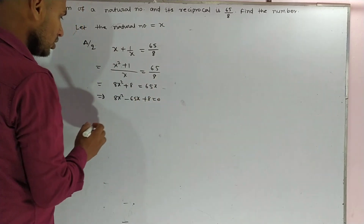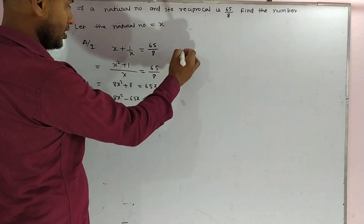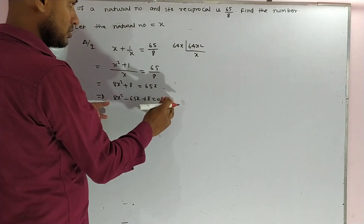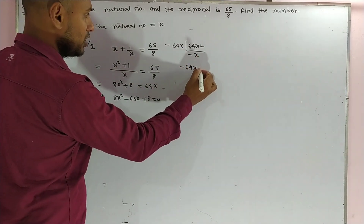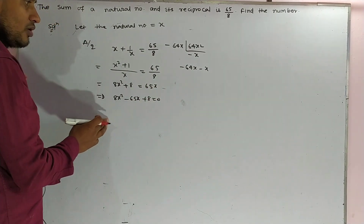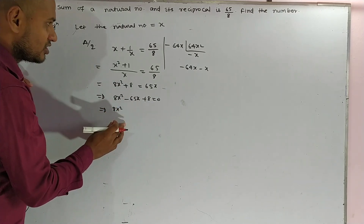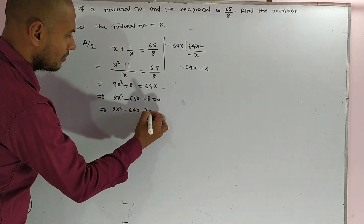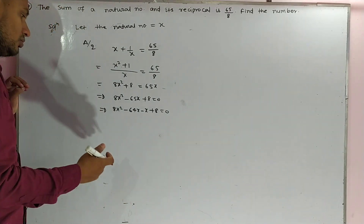Arranging this as a quadratic equation: x squared minus 65x plus 8 equals 0. To factor, we multiply to get 8x squared, finding that 64x and x give 65x — so minus 64x minus x becomes minus 65x. We are putting minus 65x as minus 64x minus x plus 8 equals 0.